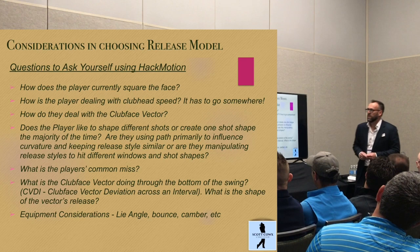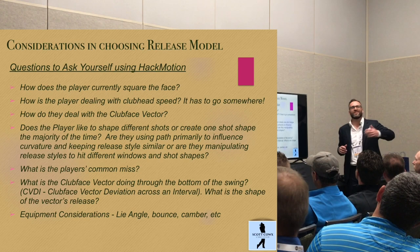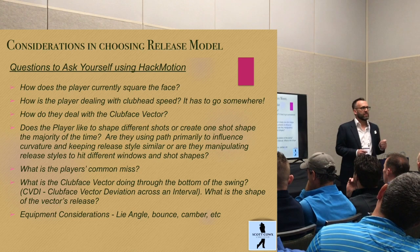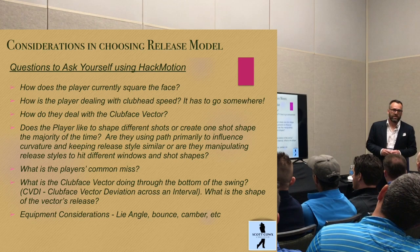A couple of things to consider when choosing a release model or seeing if a player is in a certain release model. Number one: how does the player currently square the clubface? I think that's really important to understand — at the wrist level, how is that player getting the clubface back to square?